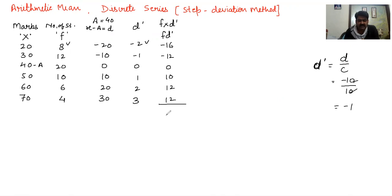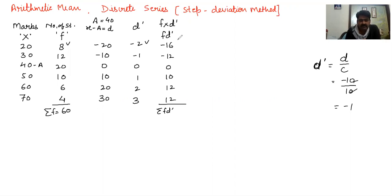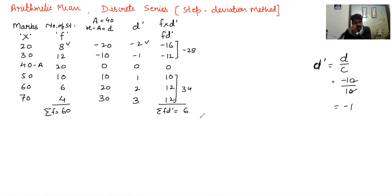Now we take the sum of fd dash — that is sigma fd dash — and also the sum of frequency, sigma f. Sigma f equals 60. For sigma fd dash: the negative values are minus 16 and minus 12, giving minus 28; the positive values are 10, 12, and 12, giving 34. So sigma fd dash equals 34 minus 28, which is 6.